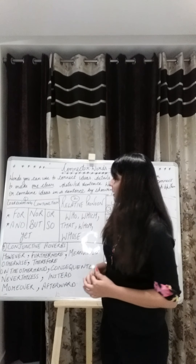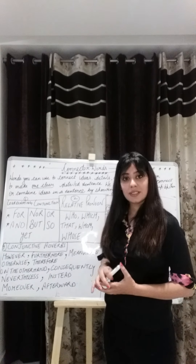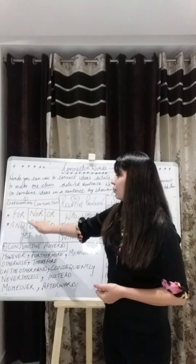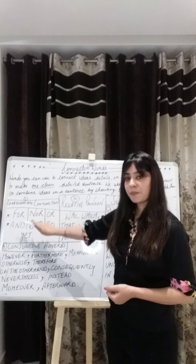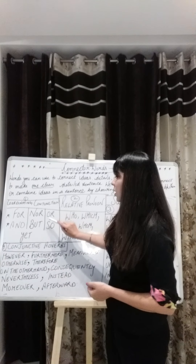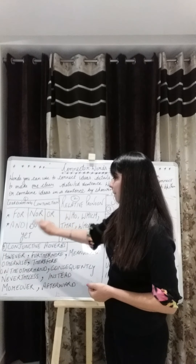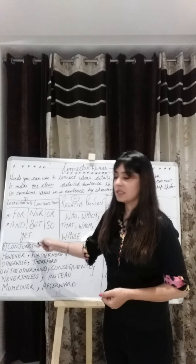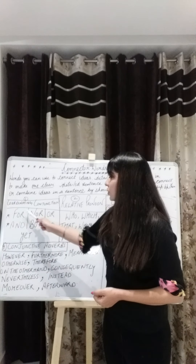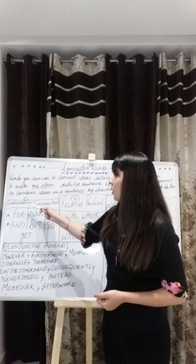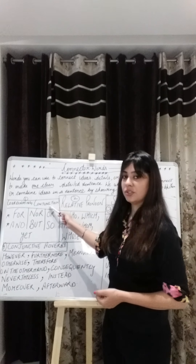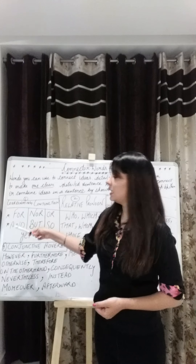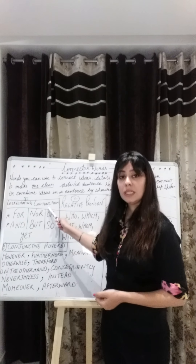When we write IELTS, Coordinating Conjunctions are used. Under Coordinating Conjunction we have: For, Nor, Or, And, But, So, and Yet. These words are Coordinating Conjunctions. In Part 2 of the video, I will explain Coordinating Conjunctions further.